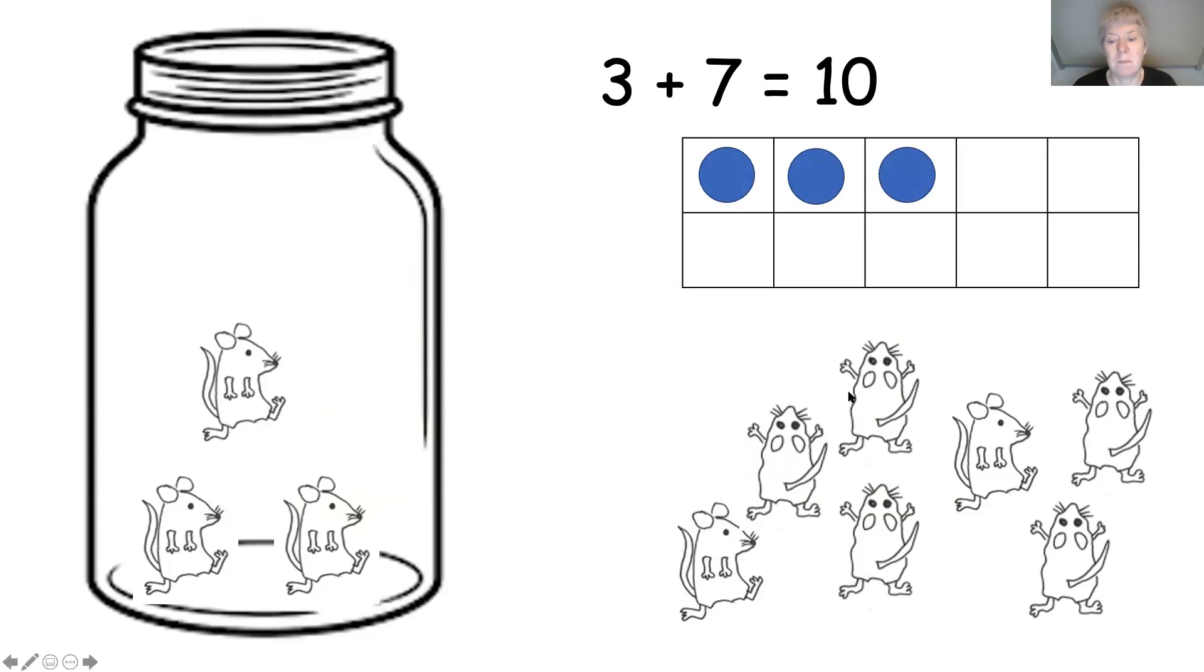That's right, there are seven. And how many mice are left outside the jar? Shall we count them? One, two, three, four, five, six, seven. So we've made our story: three and seven. Three mice are in the jar, seven mice are out of the jar. And here are our seven counters to fill up the tens frame. So it's all full.